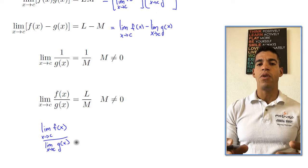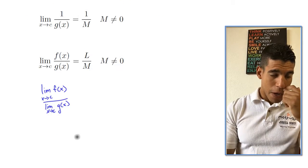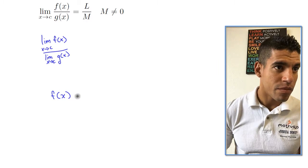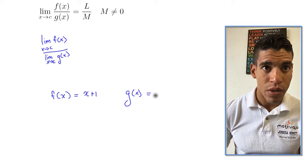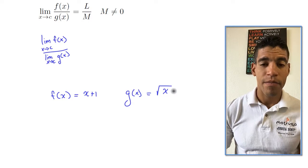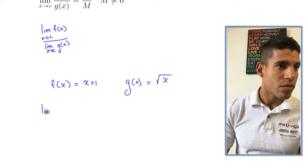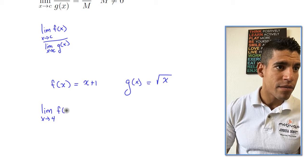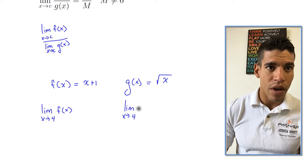Now I'm going to give an example and start using the theorems to make more sense of them. Let's say f(x) = x + 1 and g(x) = √x. I'm going to take the limit as x approaches 4 of f(x), and then the limit as x approaches 4 of g(x), and find their values.